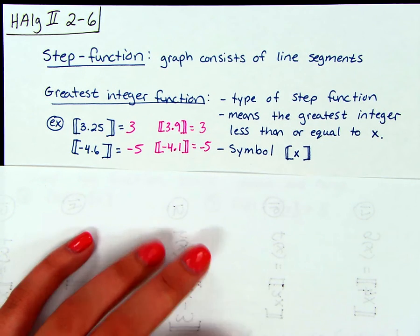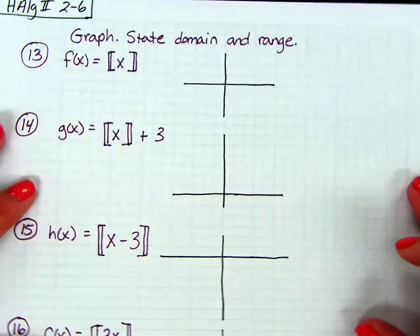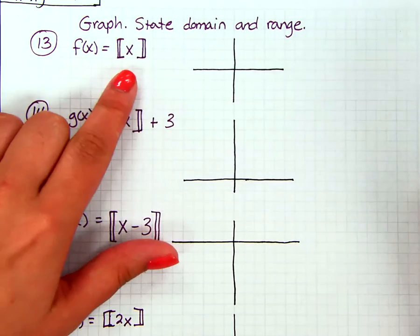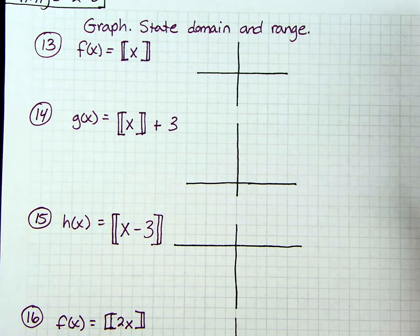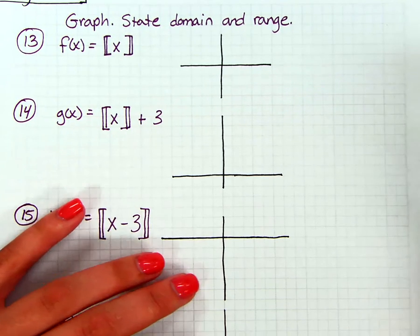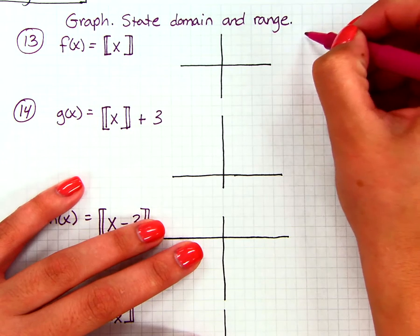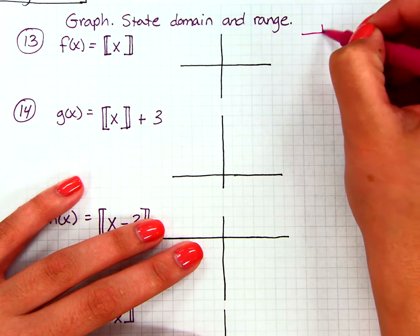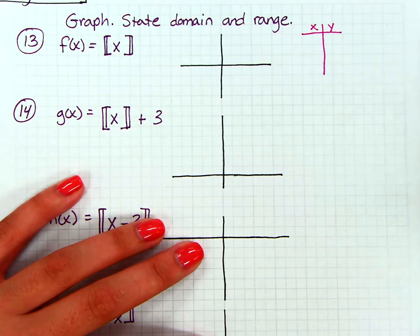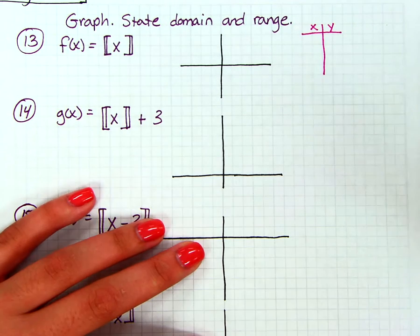Alright, so now that we know how to substitute and simplify with our greatest integer, we're going to practice graphing. So the first one that we're going to graph is just the greatest integer of x. So the best thing to do, because we really have no idea what this graph is going to look like, is to start by making a t-chart. So to start with, just to get an idea of how to graph or what it's going to even look like, I'm just going to start picking numbers.